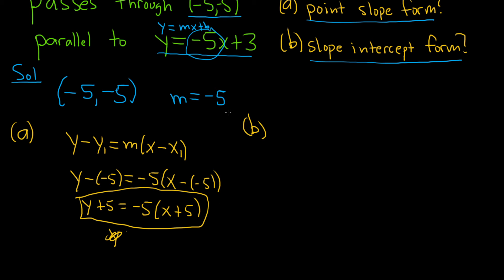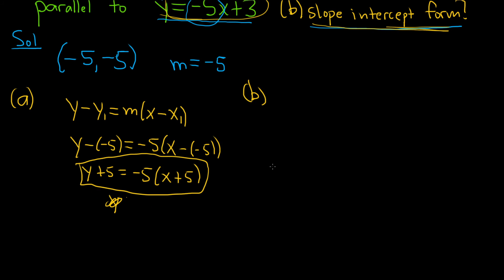Now to get the second part, you keep going. You basically solve for y. Whenever I ask you for this, you want to write it like this. So you just want to solve for y. If we were to keep going here, we would get y plus 5.